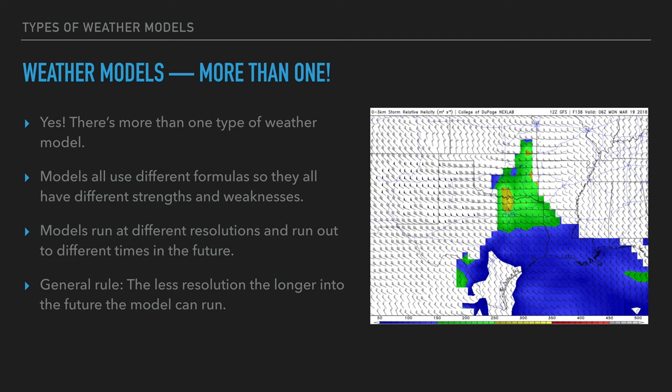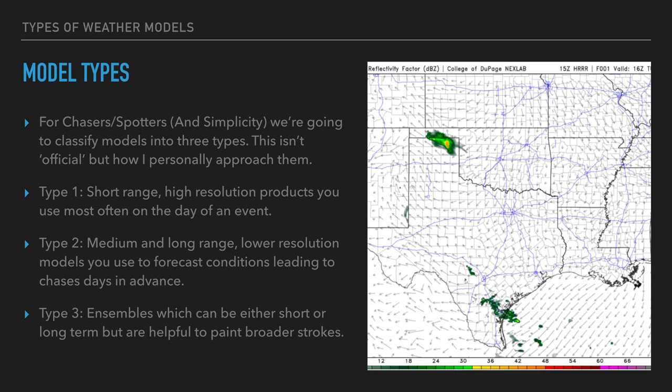For instance, the GFS runs out to 384 hours at a resolution of 12 kilometers. The NAM 3-kilometer runs out to 60 hours at 3-kilometer resolution. As a general rule, the lower the resolution — say a 12 or 9 kilometer model — the further out into the future it'll run, around 10 to 15 days. A 3-kilometer model at 15 days would require immense computing power.